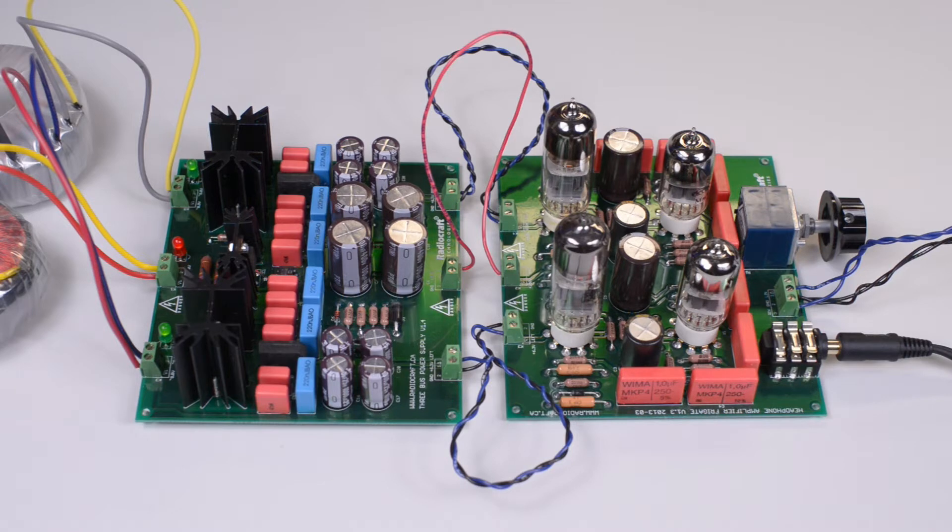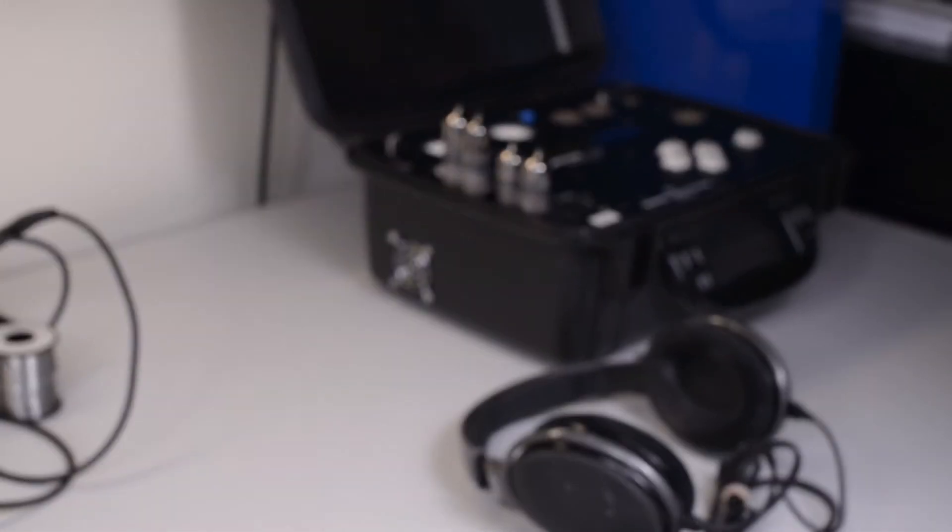Frigate uses two tubes per channel. The tubes are 6922 and 6H30PI. Both tubes are manufactured by Electroharmonix. The tubes in the left and right channel are matched with the aid of Amplitrex, a tube tester and a computer.